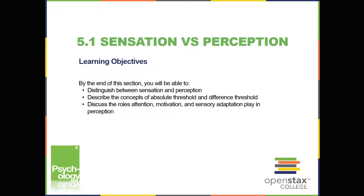It's also possible for us to get messages that are presented below the threshold for conscious awareness. These are called subliminal messages. A stimulus reaches a physiological threshold when it's strong enough to excite sensory receptors and send nerve impulses to the brain — this is an absolute threshold. A message below that threshold is subliminal: we receive it, but we're not consciously aware of it. Research shows that in laboratory settings, people can process information outside of awareness, but hidden messages have little effect on behavior outside the laboratory.